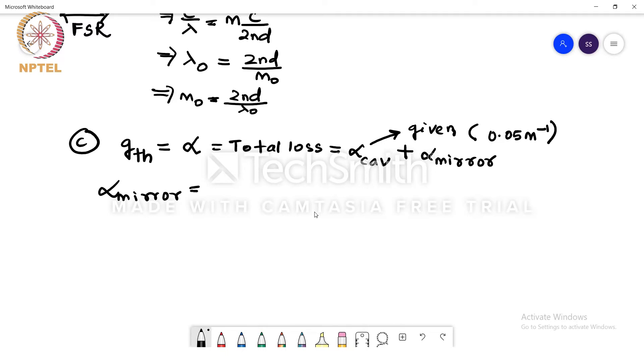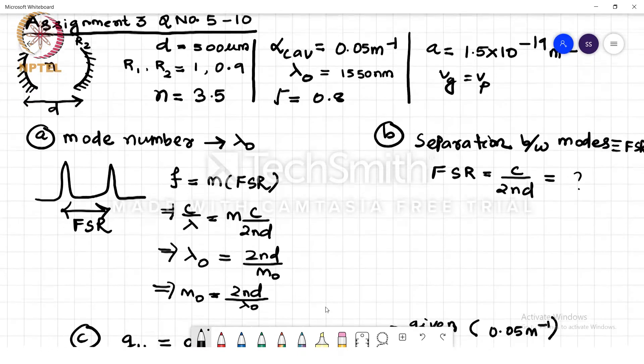So alpha mirror, we need to find the expression as we know is 1 by 4d ln of 1 by r1 into r2. So we know the cavity length d, r1 and r2 which we need to find the alpha mirror and then add it with alpha cavity. That will give us the threshold gain.